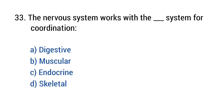Question number thirty-three. The nervous system works with which system for coordination? The right answer is option C: Endocrine.